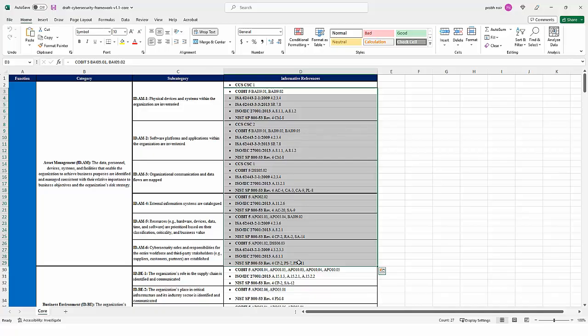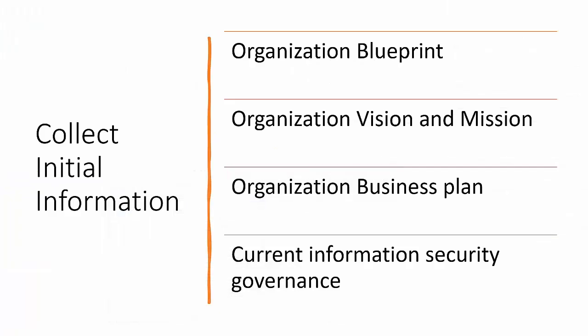We follow a step-by-step process to implement the cybersecurity framework, but before doing so we need to collect key information. The first thing is the organization blueprint: the complete name and type of the organization, the org chart, who the CISO is, the organization's objectives, the list of critical data types, and the list of critical business processes.